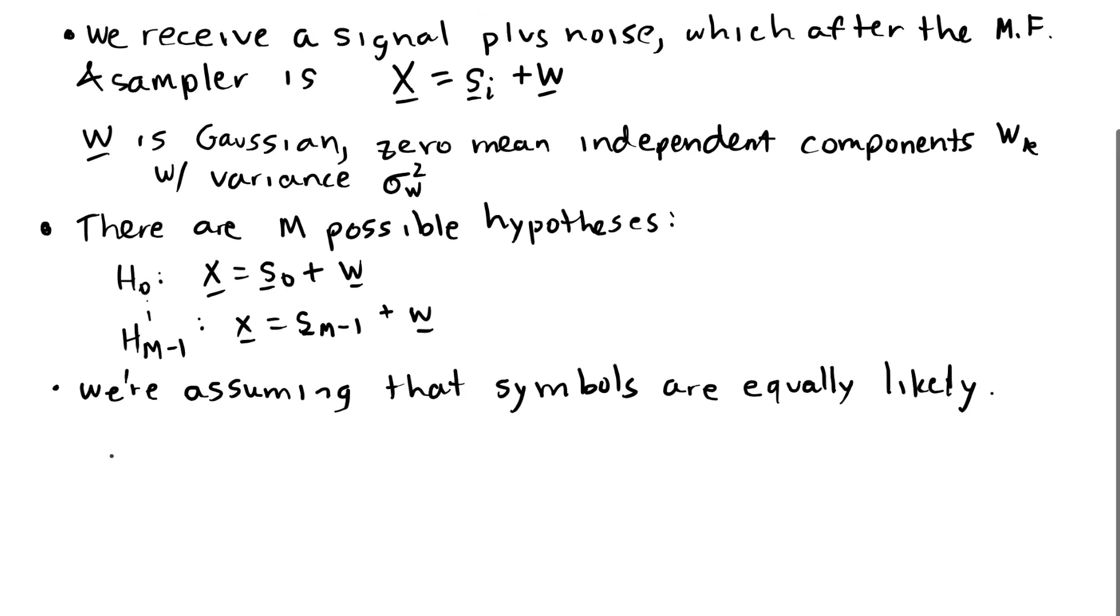So the main question is, what is the decision region for each symbol? That is, given a particular value of x, what should the decision be?